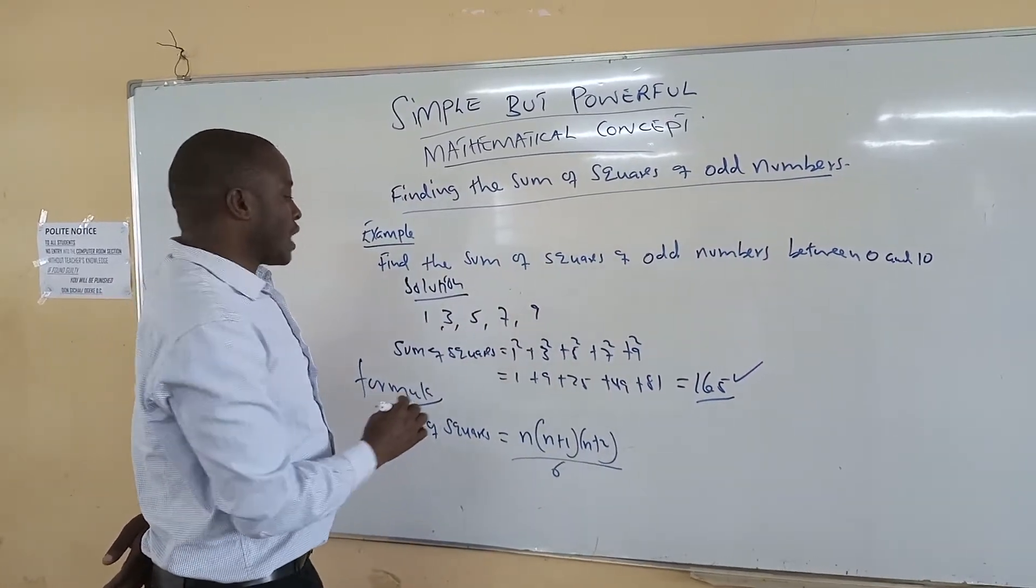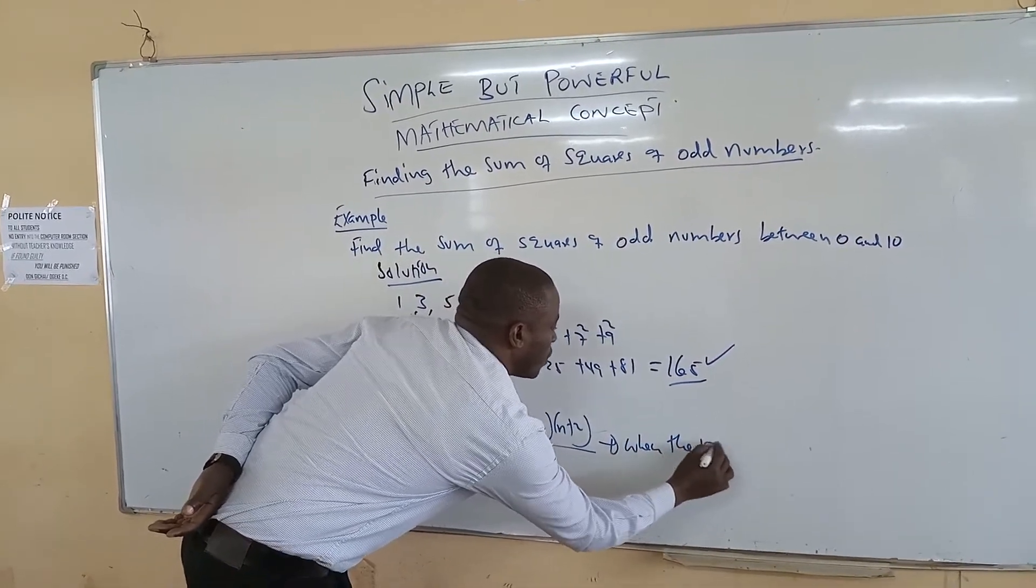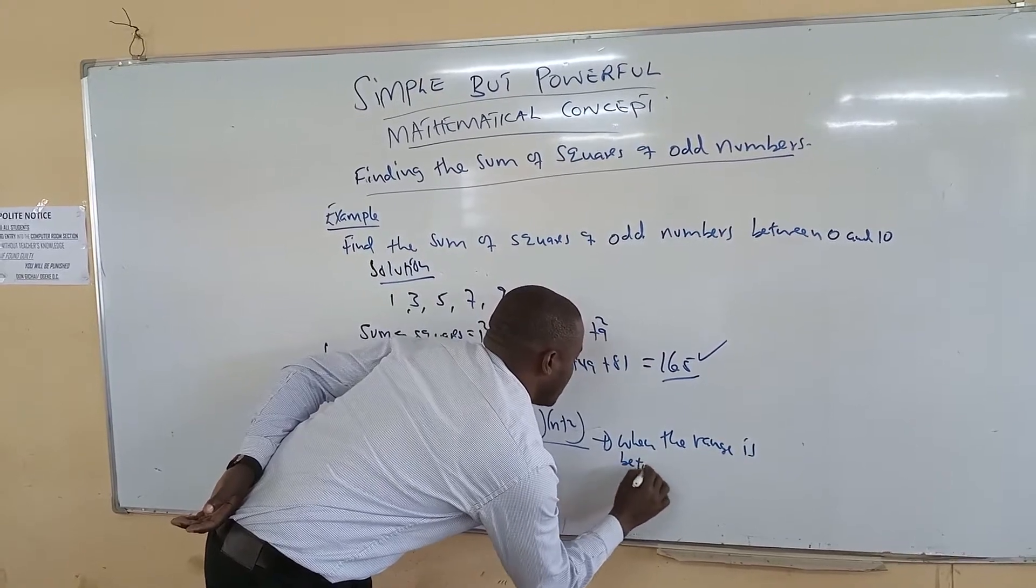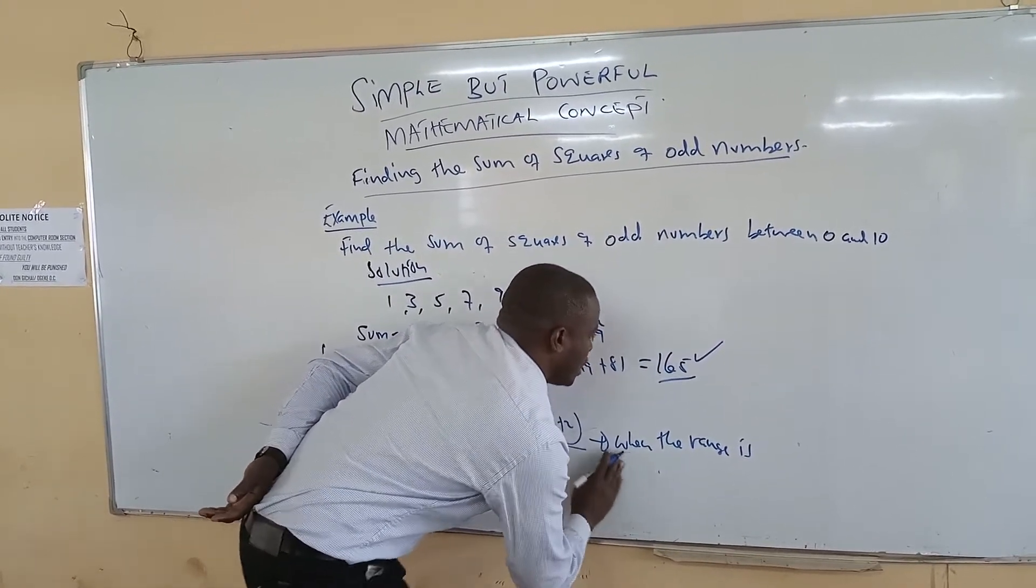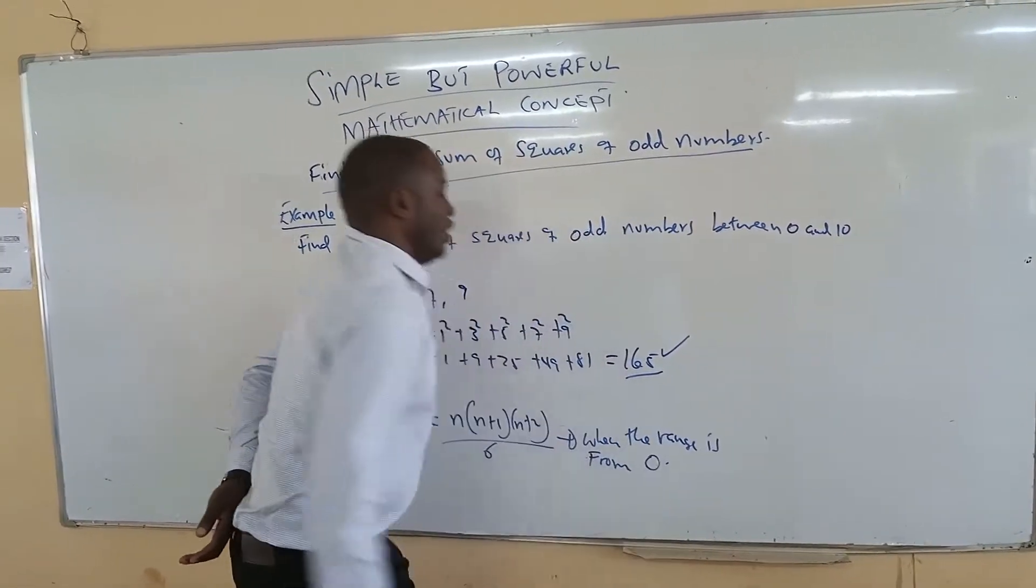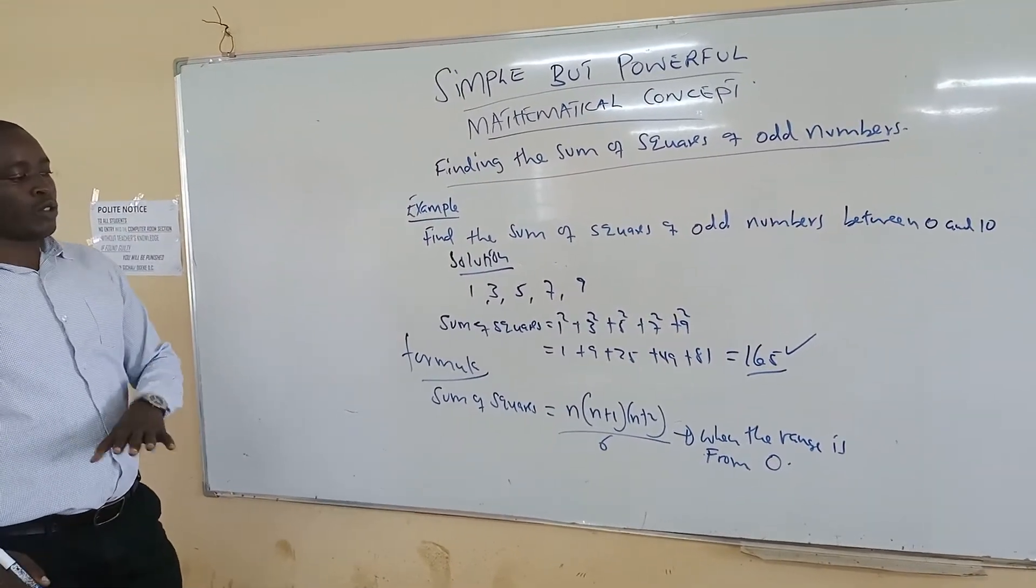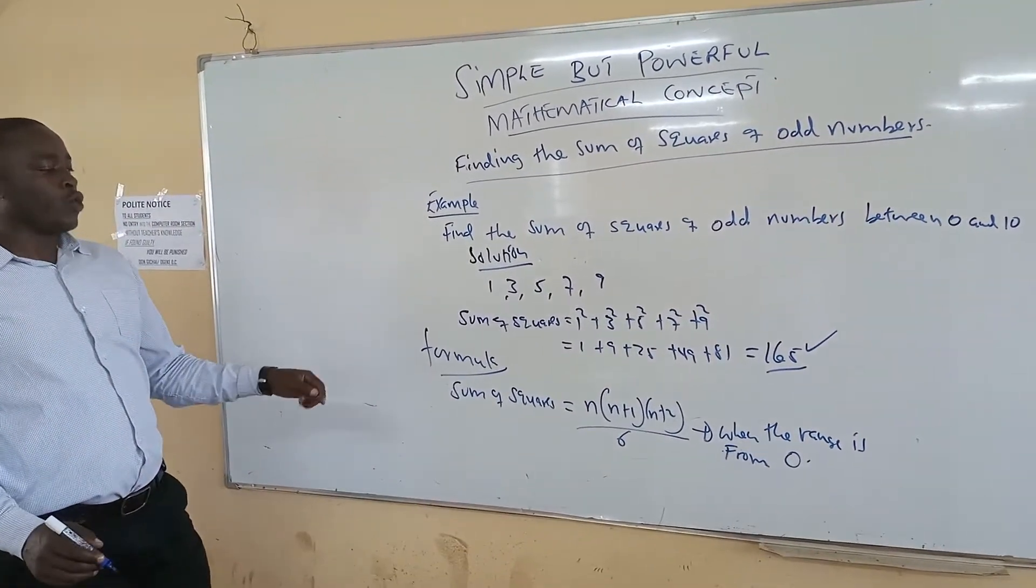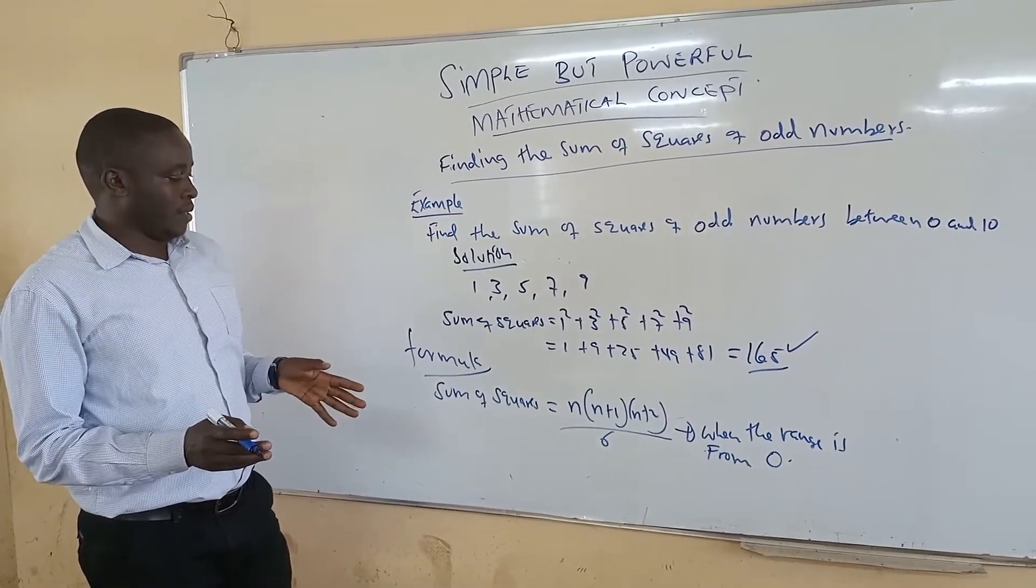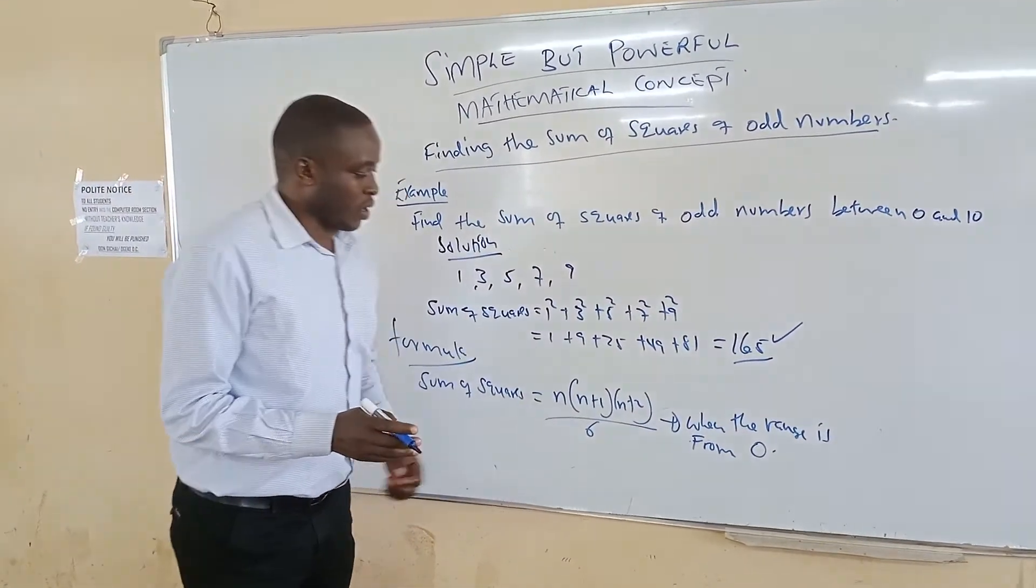This formula works for all when the range is from 0. So the range must be from 0, from 0 to 100, from 0 to 1000, from 0 to whatever, then you are able to find it. But if it is between, maybe you are told between 20 and 30, you will not apply this formula, you cannot apply this formula.